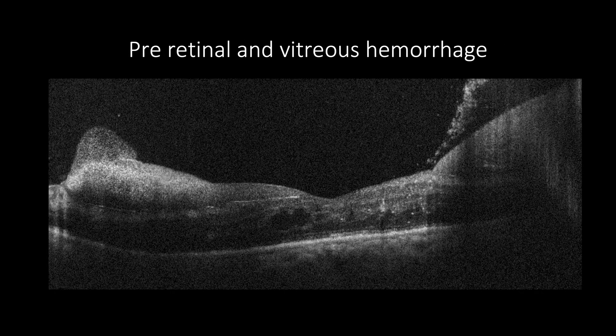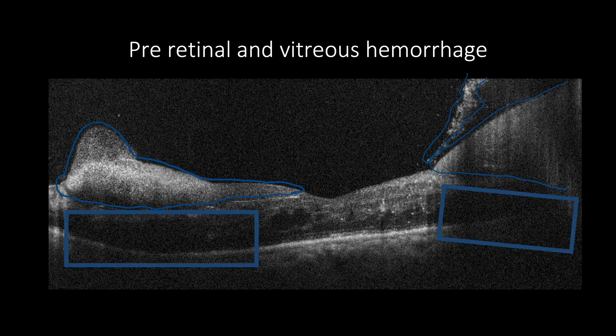OCT can be handy in revealing complications of proliferative diabetic retinopathy at the posterior pole. These include vitreous hemorrhage, which appears as hyperreflective dots, and pre-retinal hemorrhage, which appears hyperreflective with smooth borders casting a shadow. OCT is useful in these cases as it will rule out diabetic macular edema, which may impact treatment and follow-up decision-making.